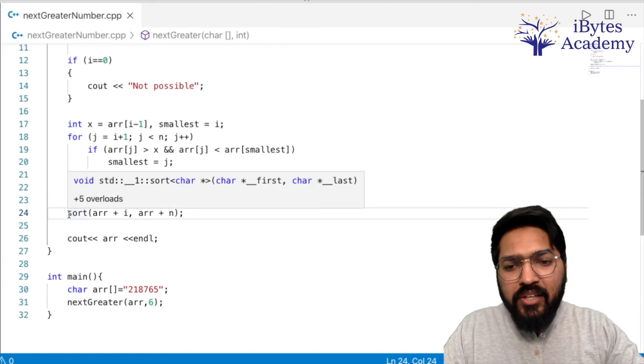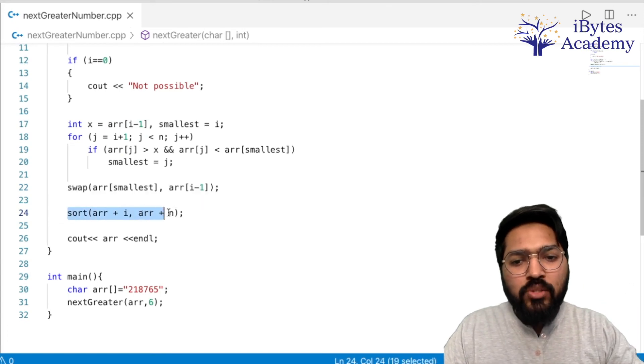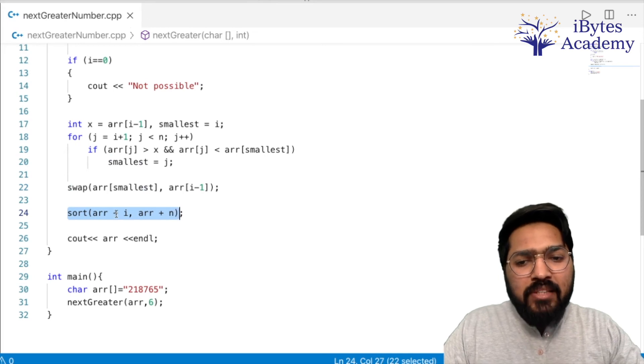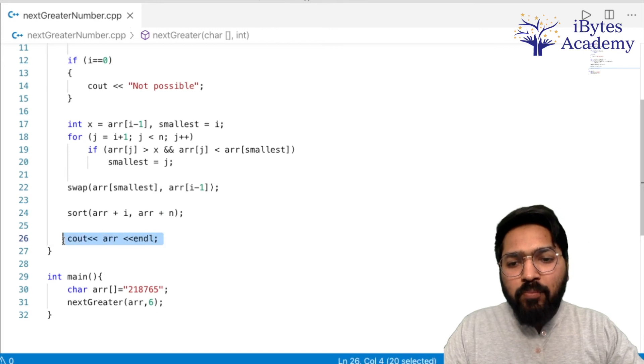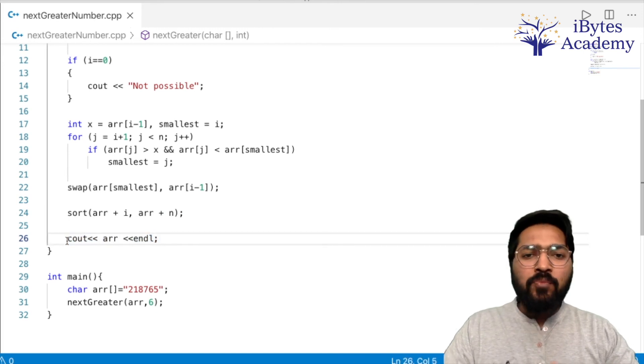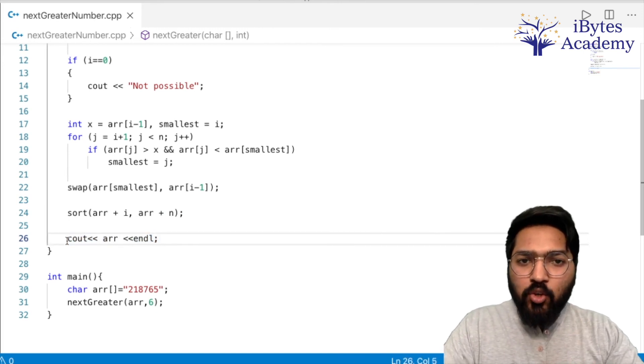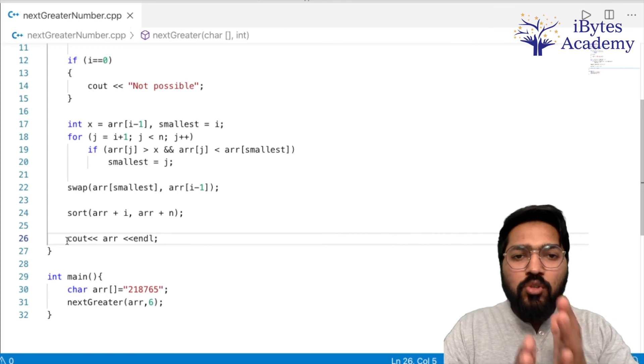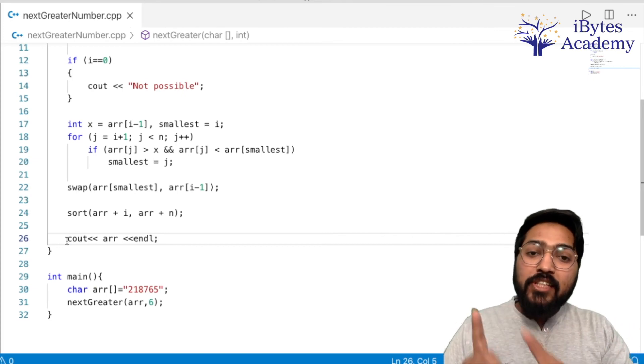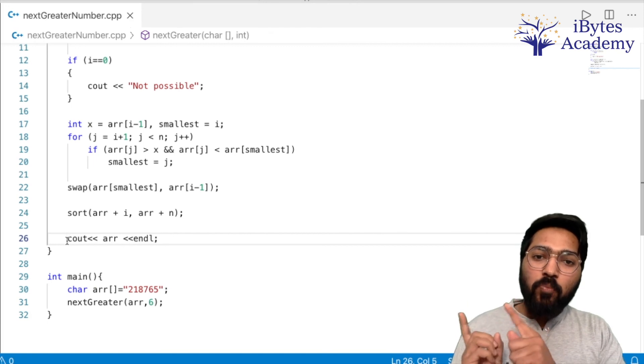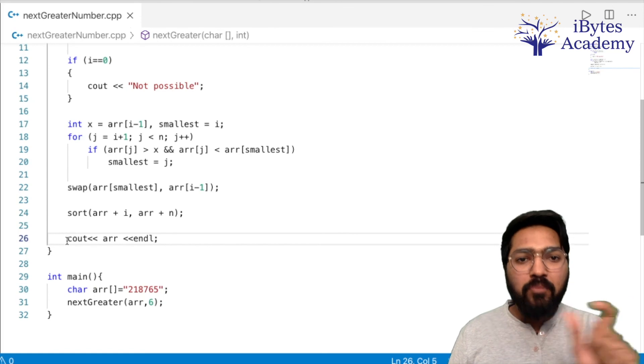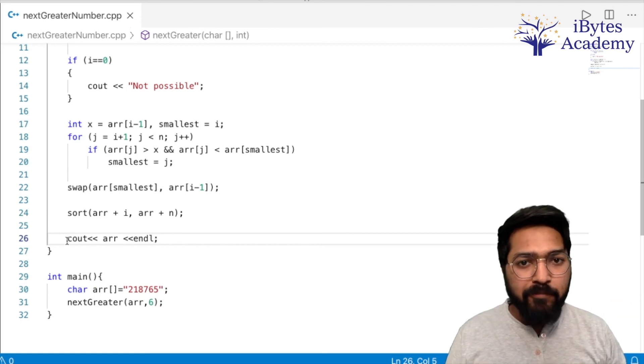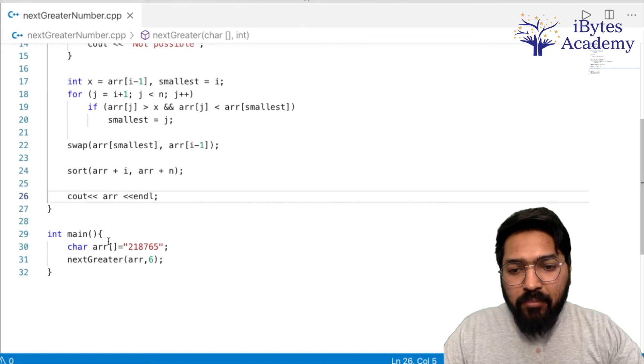Then our last step was to sort the digits to the right. So I will use the sort function from the standard template library to sort all elements from array plus i to array plus n. And then I will print the array. Remember that when we print a character array, a string gets printed. If it was a normal integer array, printing it would print its address, but character array printing prints the string because this is how cout has been implemented.